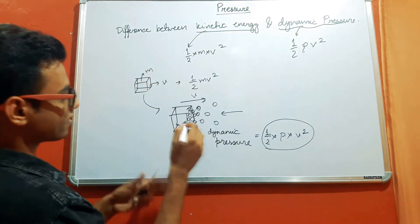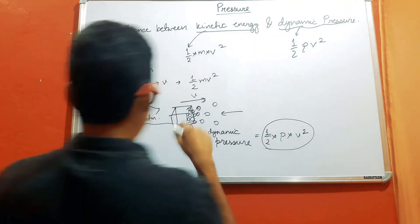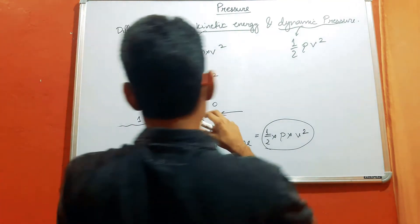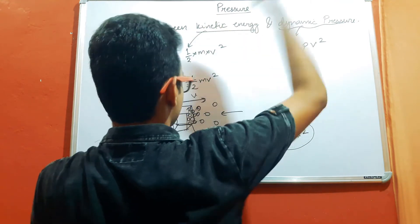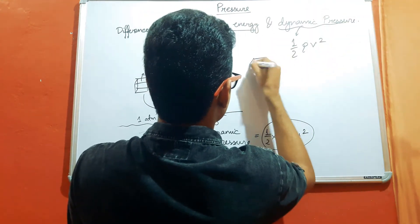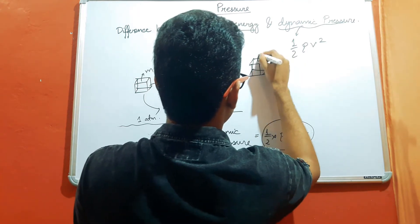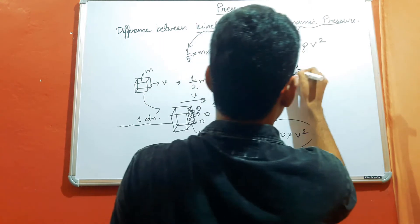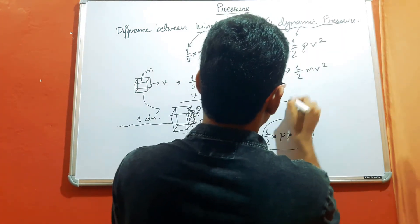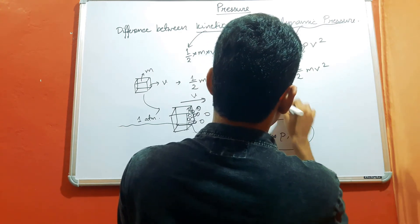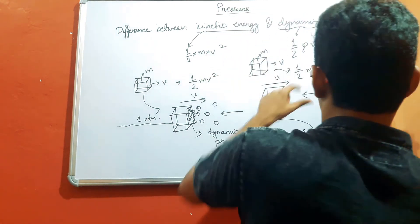Now suppose this discussion is at atmospheric pressure, that is 1 atm, at the surface of the earth. Now suppose I am taking this particle to some altitude far away from the surface of the earth, and there this particle is moving with the same velocity v, possessing the same mass m. So again the kinetic energy will be half into mass of this particle into v squared. But now the air which is hitting this particle from this direction, because the particle again is moving in this direction — so this air will again hit this particle from this direction.